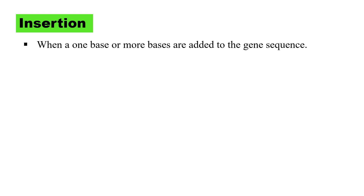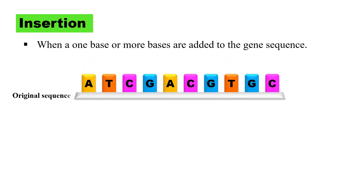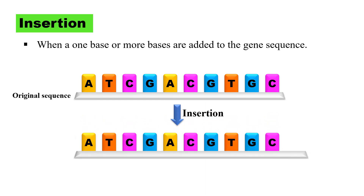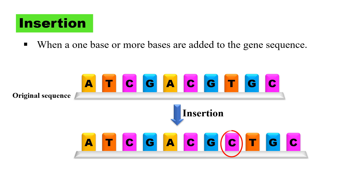Point mutations may be of insertion or deletion types — let's discuss all these types one by one. Insertion: as the name indicates, insertion means there will be insertion of one or more bases in the gene sequence. This is the original gene sequence without any mutation, but in case of insertion mutation, there will be insertion of one or two bases between these sequences. For example, this cytosine base inserts itself into the original sequence, changing it into the mutated sequence. So this is the insertion mutation.